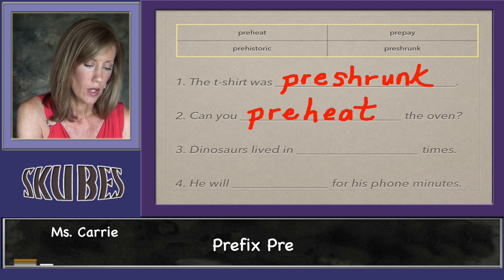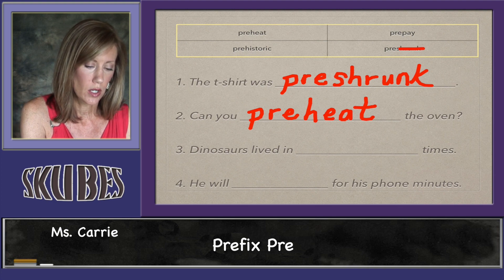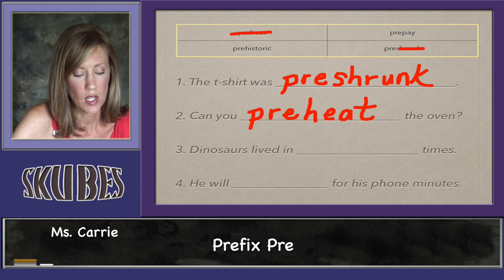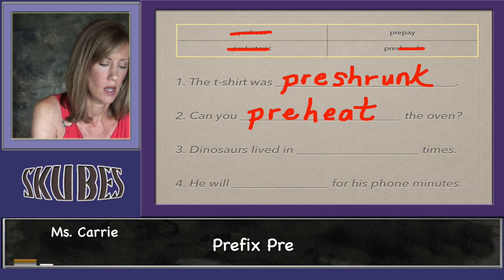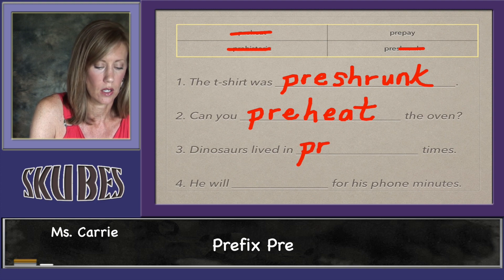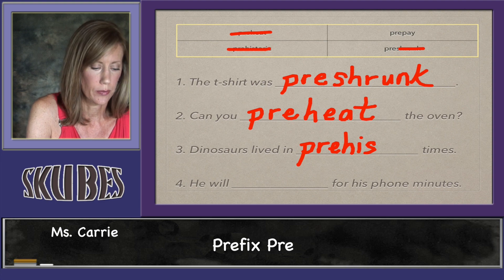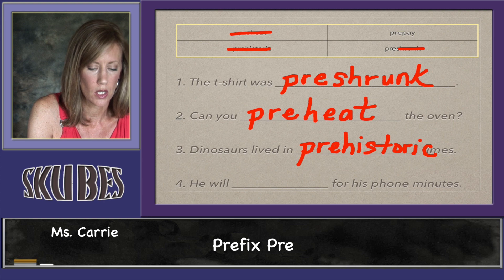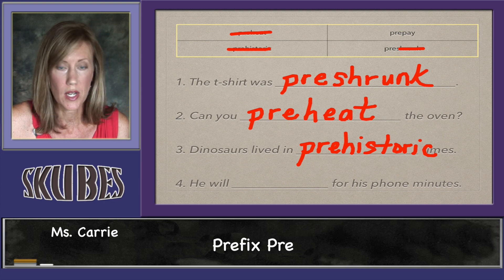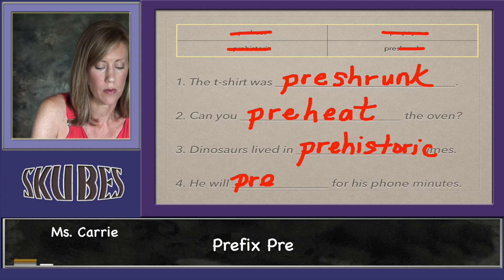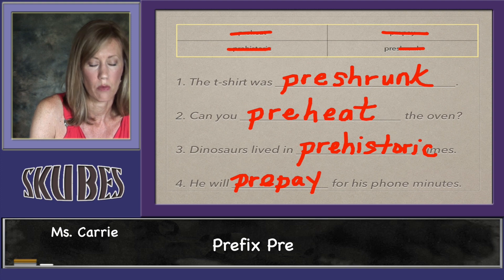Sentence three: 'Dinosaurs lived in blank times' — that would be 'prehistoric,' which means before written-down history. Sentence four: 'He will blank for his phone minutes' — he will 'prepay,' so he's going to pay for the minutes he uses on his phone before he actually makes his phone calls.